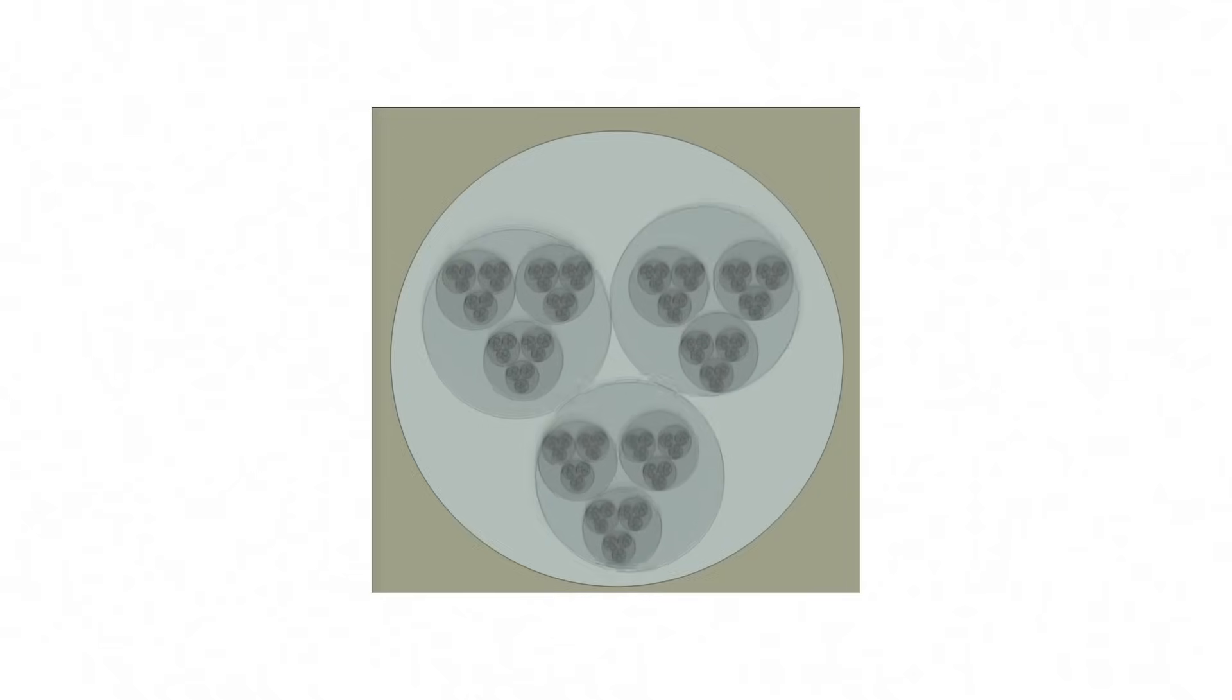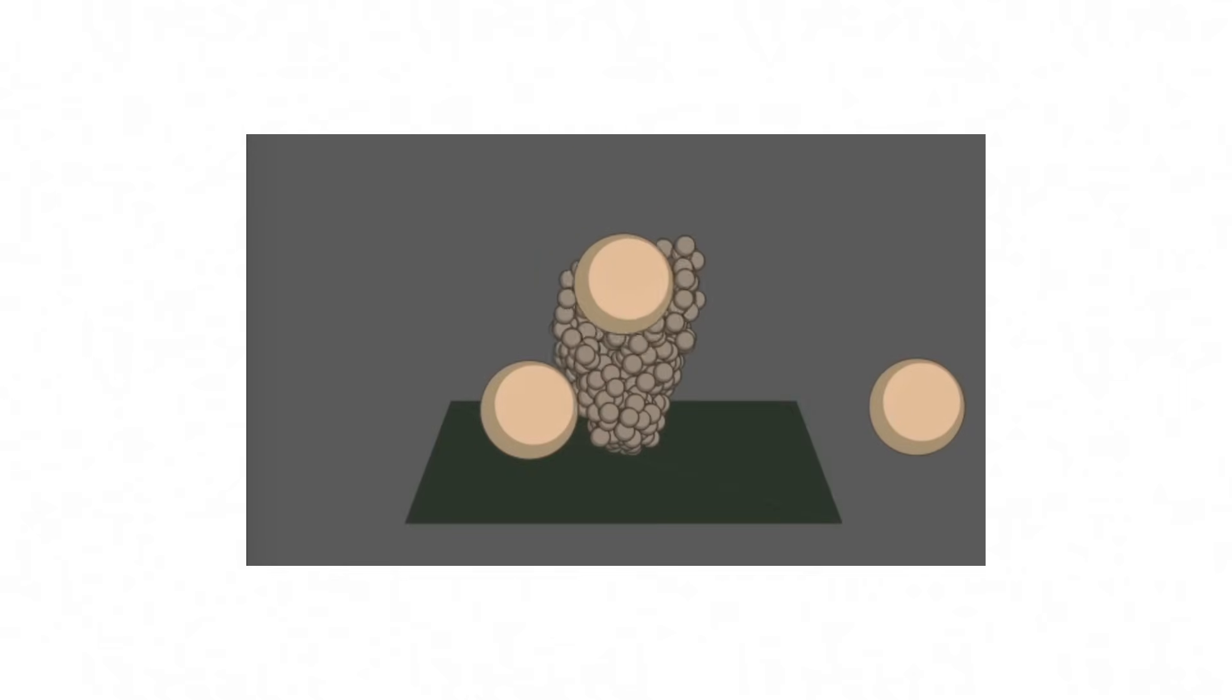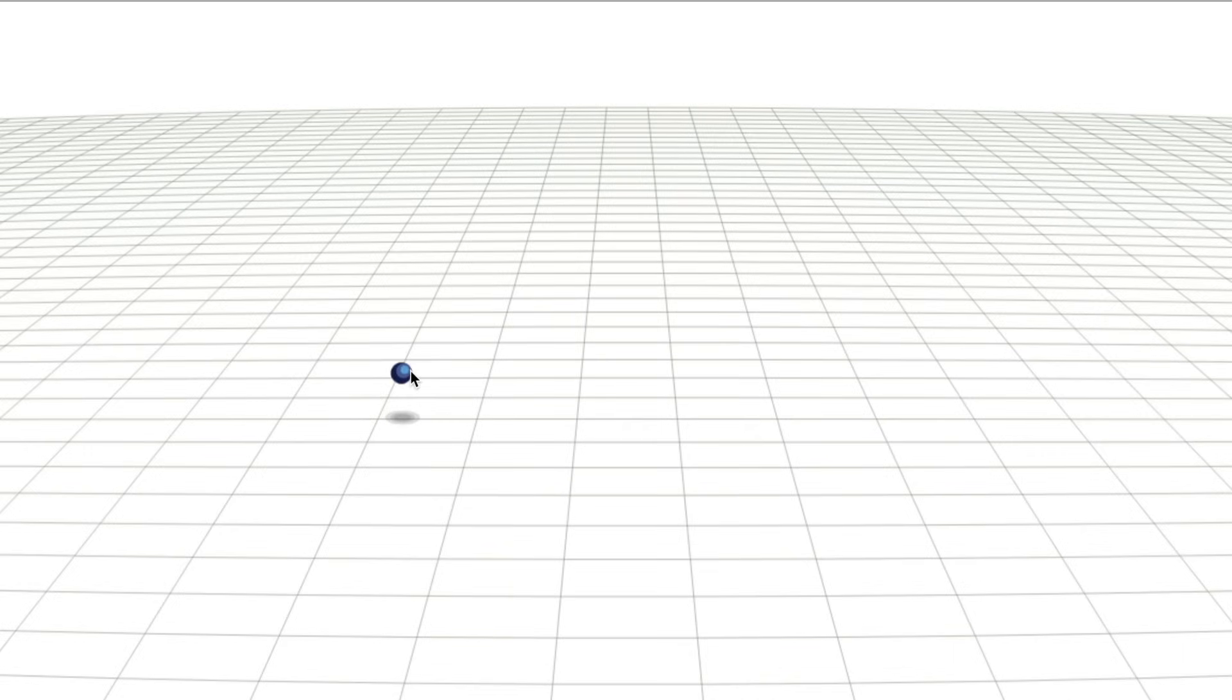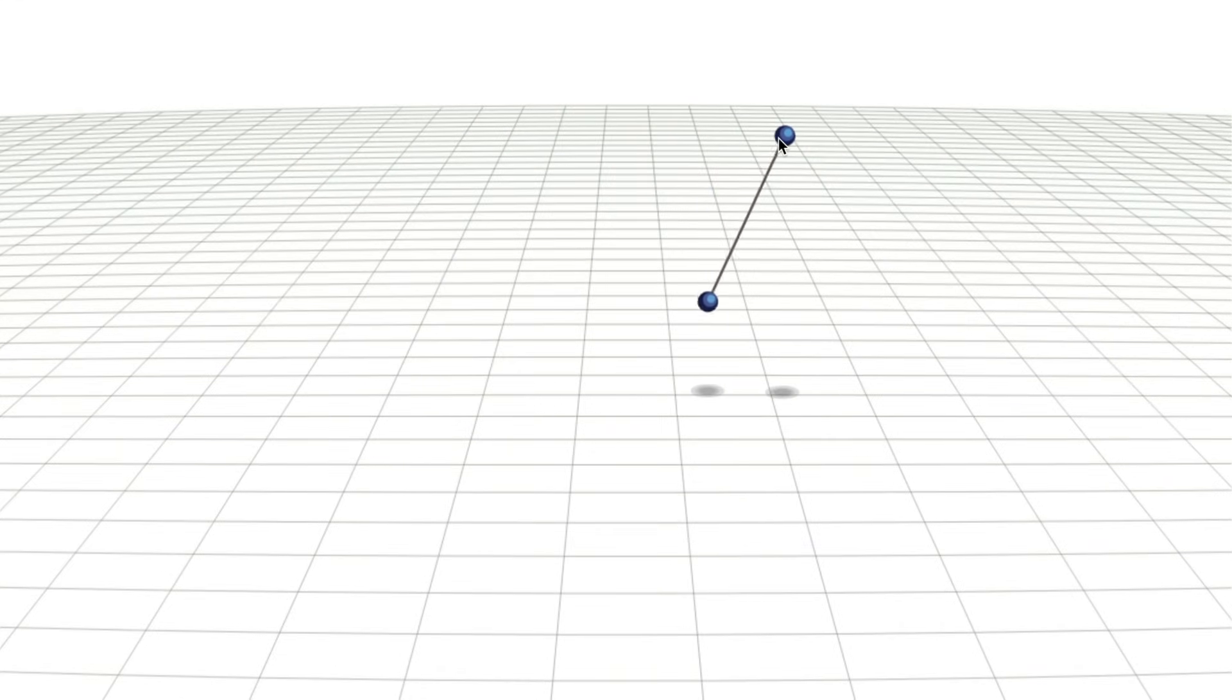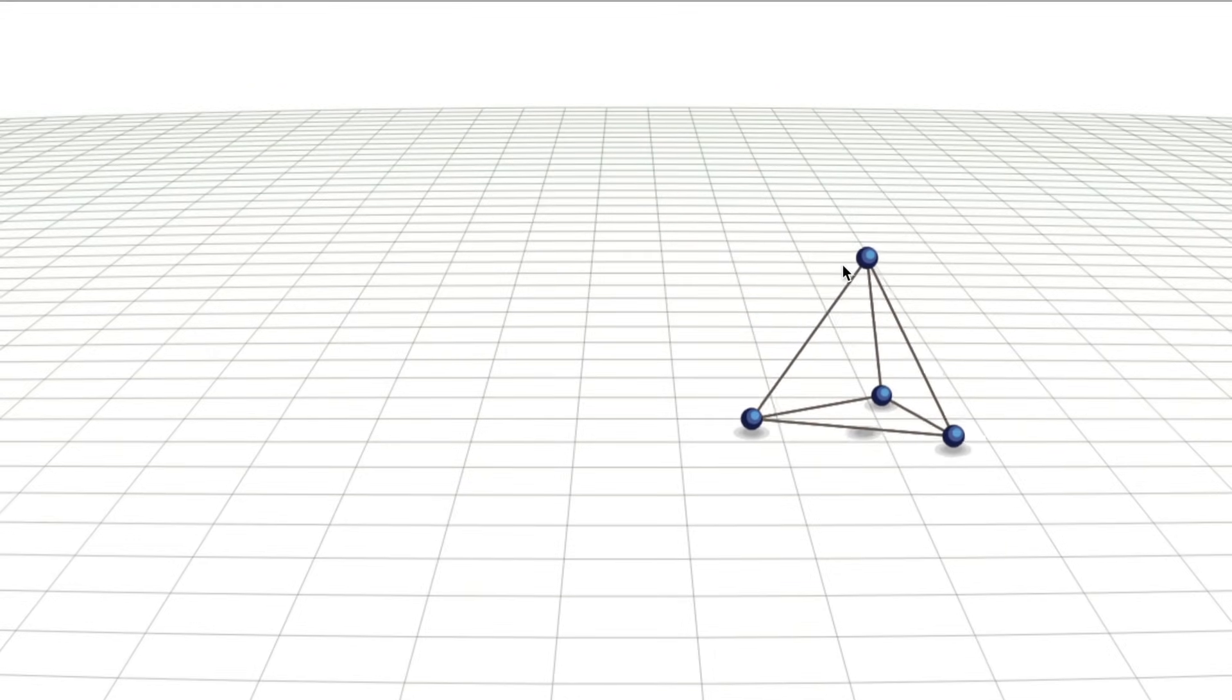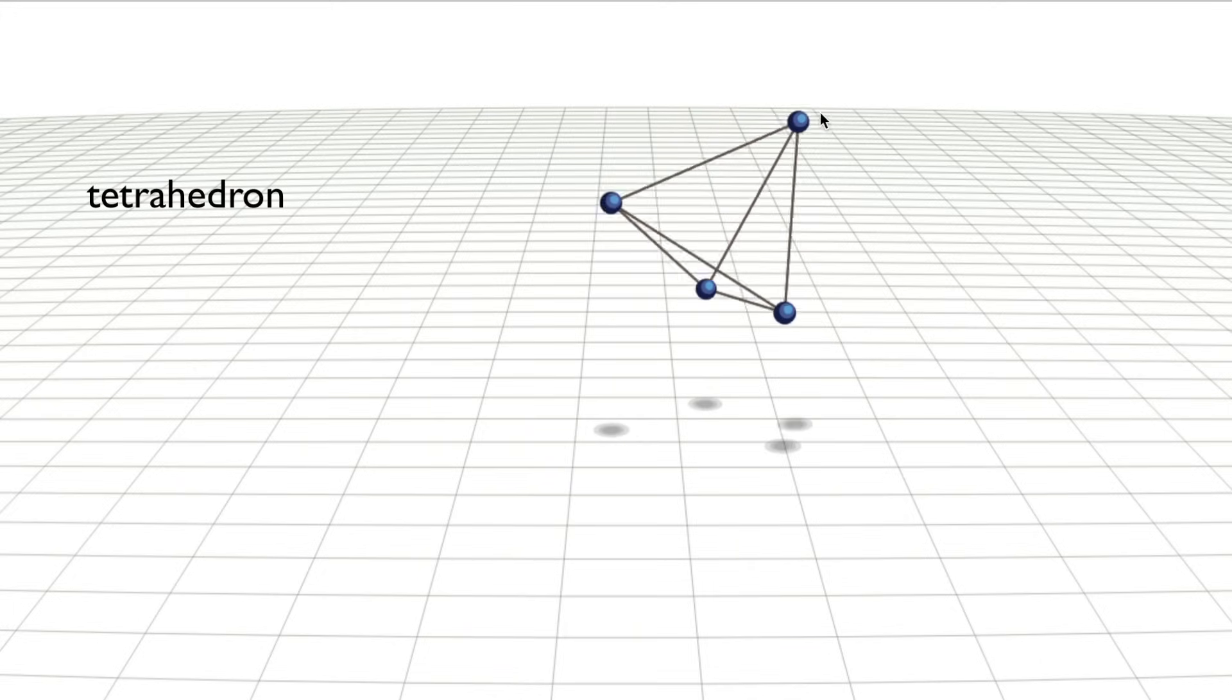I'll come back to that in a moment, but first I want to talk about simulated physics. So one of the first animation tricks I learned was how to make a bouncing ball. Not long after that, I learned how to attach two balls with a spring. If you connect three balls with three springs, you get a flexible triangle.